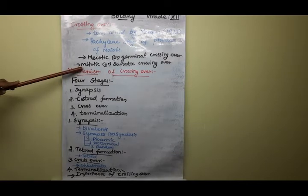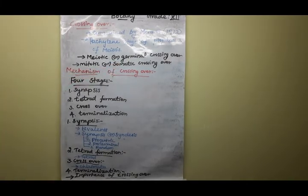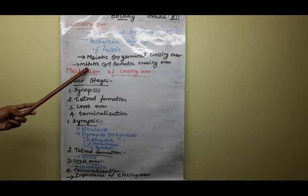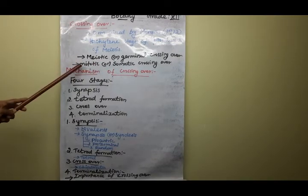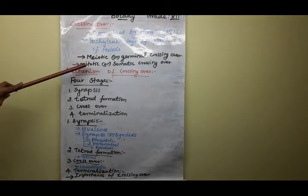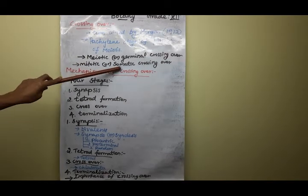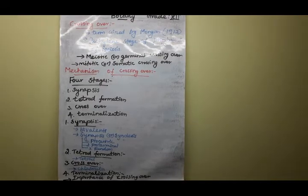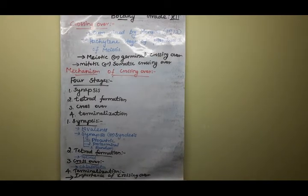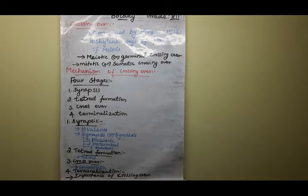Somatic crossing over means this occurs in somatic cells during mitotic cell division. That type is called mitotic or somatic crossing over. You should learn: what do you mean by somatic crossing over? And what do you mean by germinal crossing over? These are the two important terms.